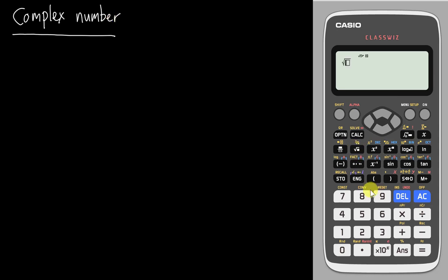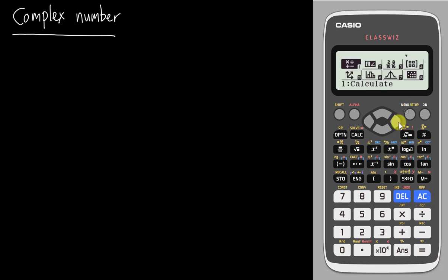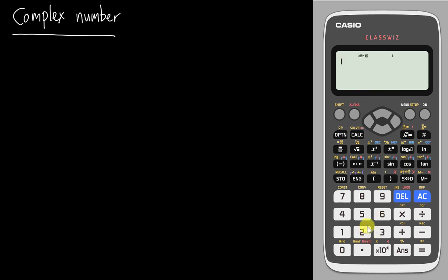I'll give you a brief example. If I ask for the square root of negative 100, the calculator will give you a math error. But if you go into the menu and choose complex number, which is number two, and then type the same thing — square root of negative 100 — you will not get a math error; you will get 10i.